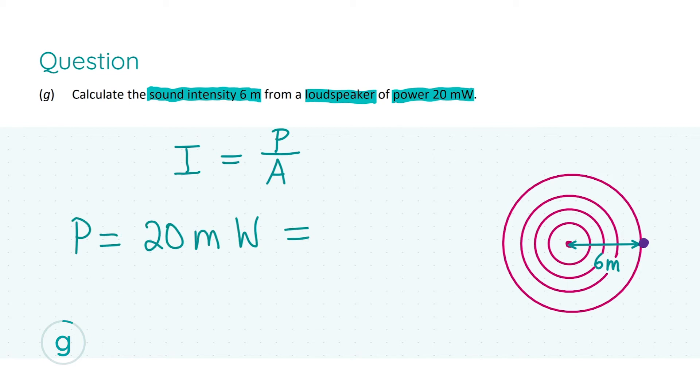How do we solve this? We know the power equals 20 milliwatts. We need to convert this to SI units which gives us 20 times 10 to the power of minus 3 watts. You can simplify this in your calculator. To find the intensity we also need the area and we can figure this out by looking at the diagram.